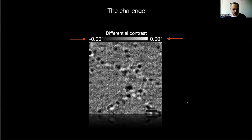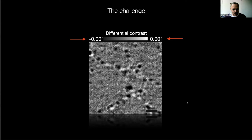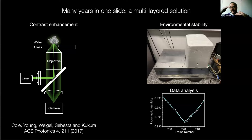This is one of those slides where people have spent many years working very hard and you put it all in one slide and talk about it in 40 seconds. Essentially, one critical aspect is that we slightly changed the way we do the illumination and detection, which changed the ratio between light scattered by the protein and light reflected at the interface. If you decrease the amount of reflected light while keeping the scattered light constant, your contrast gets bigger.